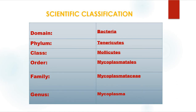The scientific classification of mycoplasma: domain is Bacteria, phylum is Tenericutes, class is Mollicutes, order is Mycoplasmatales, family is Mycoplasmataceae, and genus is Mycoplasma.